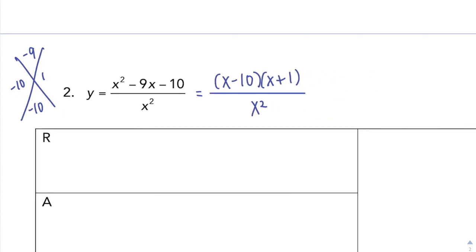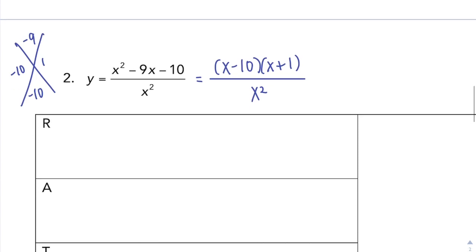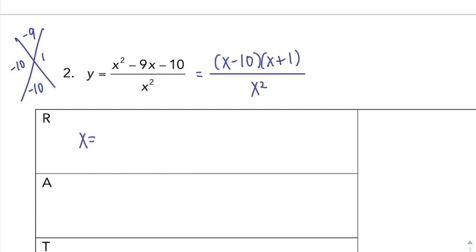And nothing cancels out. So R, roots, x-intercepts, set the numerator equal to 0. That's why people like RATEY as they remember R, numerator equal to 0, A, denominator. So that's why a lot of people like RATEY as it just helps them remember what's what. So my roots are at 10 and negative 1. So I have a point at 10, 0, and I have a second point at negative 1, 0.